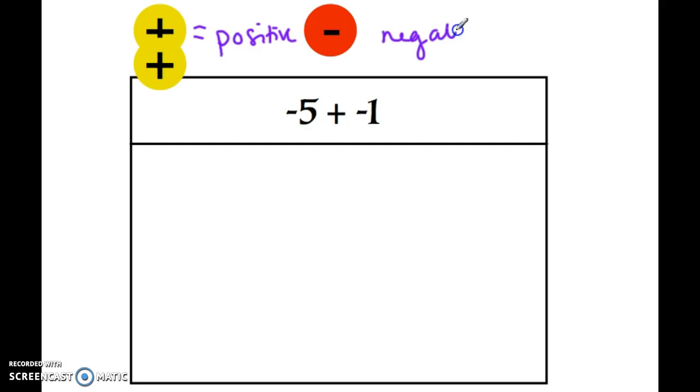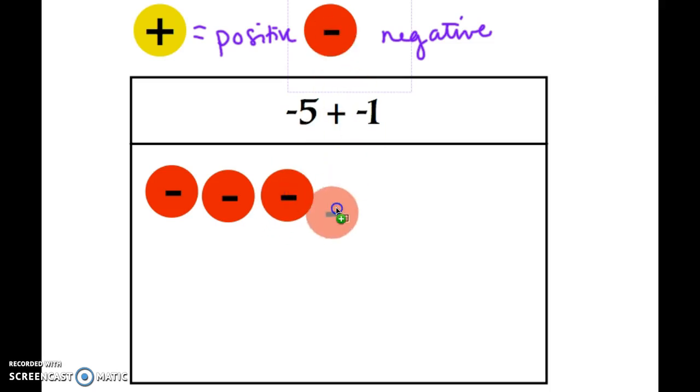When you're using a chipboard to represent a problem like this, negative 5 plus negative 1, what you want to do is take your chips as written and get them out. So we want negative 5, so go ahead and pull out 5 red chips, and to that negative 5 we're going to add negative 1, so see how we have my 5 red chips and now I'm going to add 1 red chip.